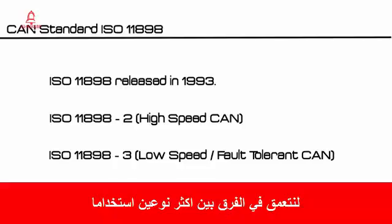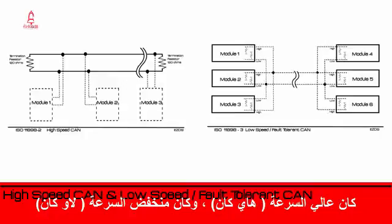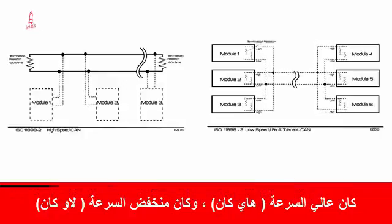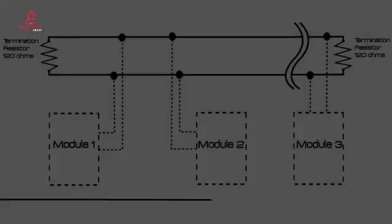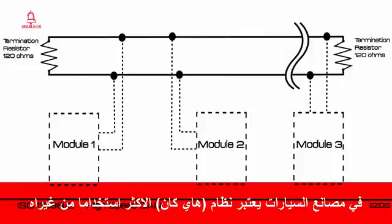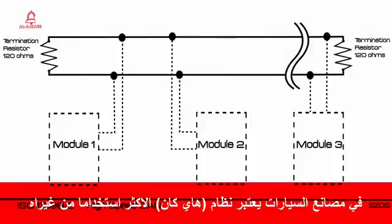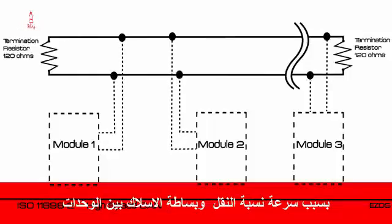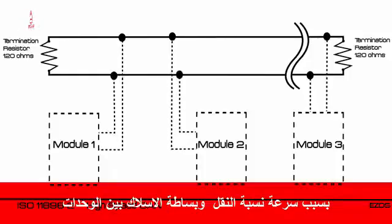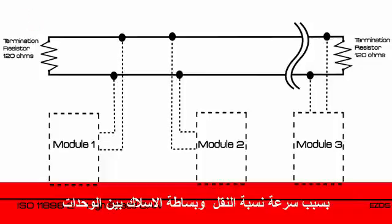Let's dive into the major differences between the two most commonly used types: high-speed CAN and low-speed CAN. In the automotive industry, high-speed CAN has been the most widely used protocol among others, due to its fast transfer rate and simplicity of wiring between modules.